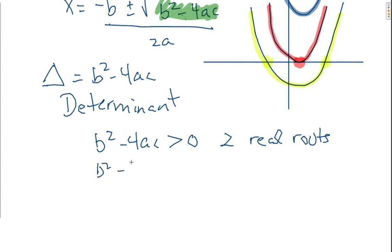If b squared minus 4ac equals zero, then there is exactly one real root. And it bounces. It's actually called a double root because it's used twice.